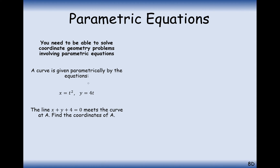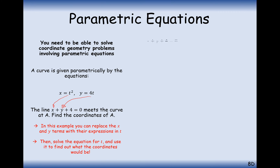A curve is given parametrically by x equals t squared and y equals 4t. The line x plus y plus 4 equals zero meets the curve at point A — find the coordinate of A. You can replace x and y in terms of t: substitute t squared for x and 4t for y into the line equation, then solve the resulting quadratic. Factorising gives t plus two squared equals zero, so t equals minus two.